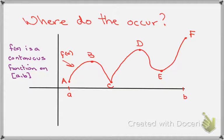So one question you might ask is where do these maximums and minimums occur? Let's just look at this graph that I have here of f of x. It's a continuous function on the closed interval a, b. And notice that I've labeled some points of interest.